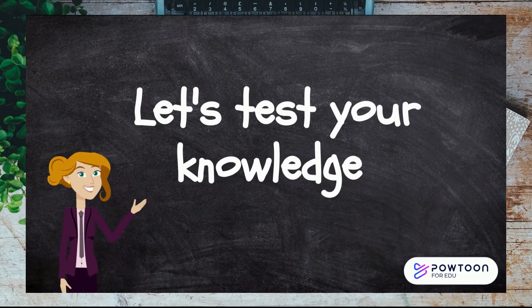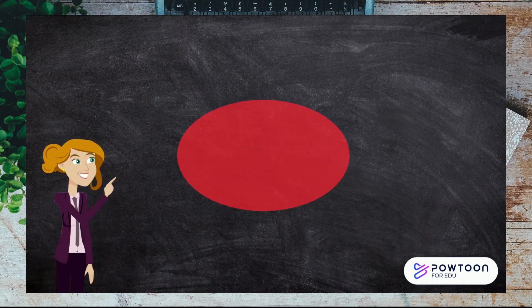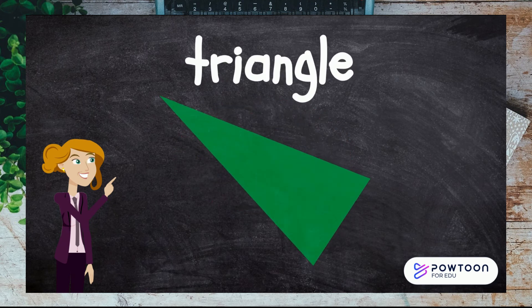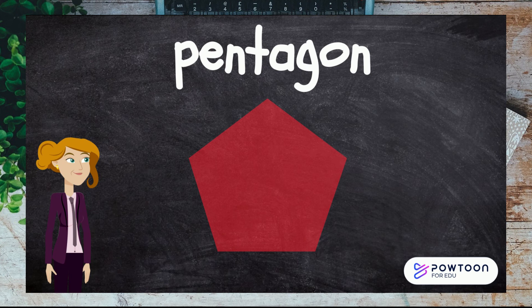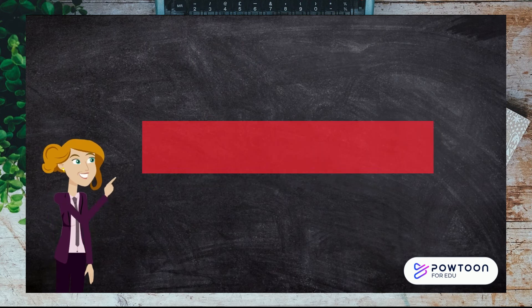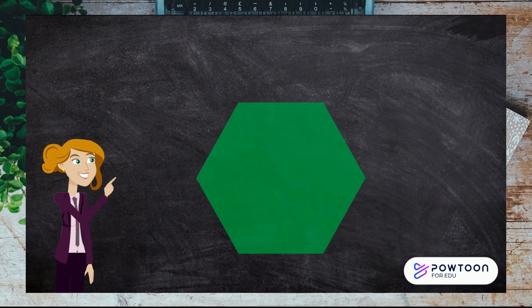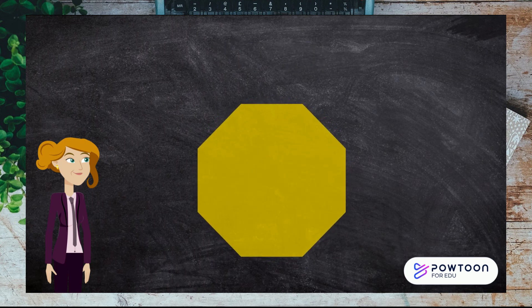Now let's check your knowledge. Shout the name of the shape before I say it. Are you ready? Oval. Triangle. Pentagon. Trapezoid. Rectangle. Hexagon. Circle. Octagon.